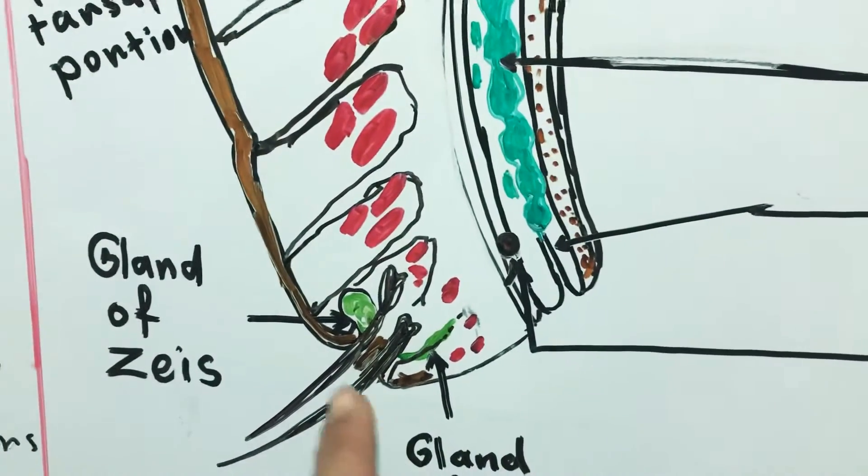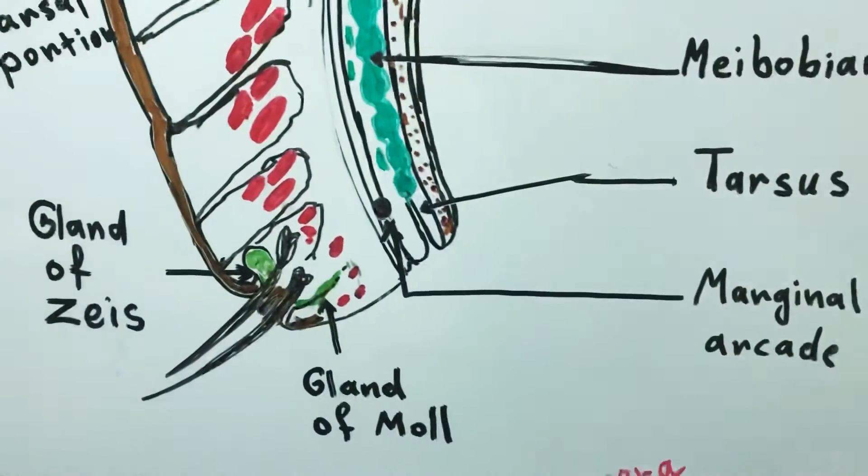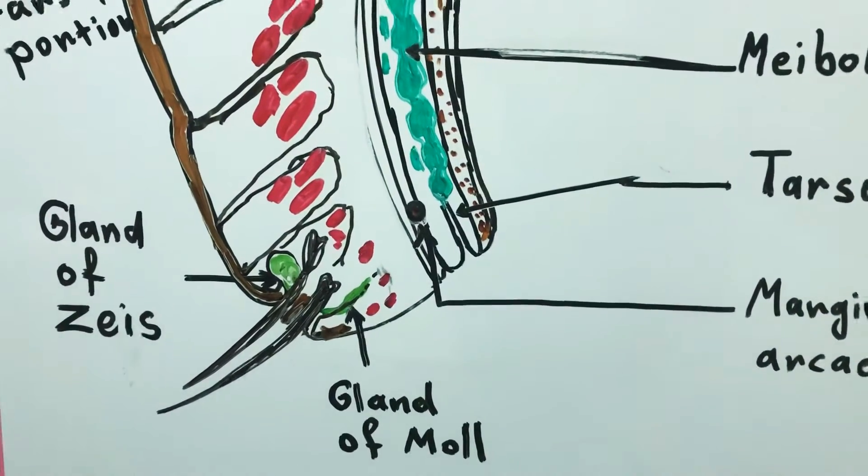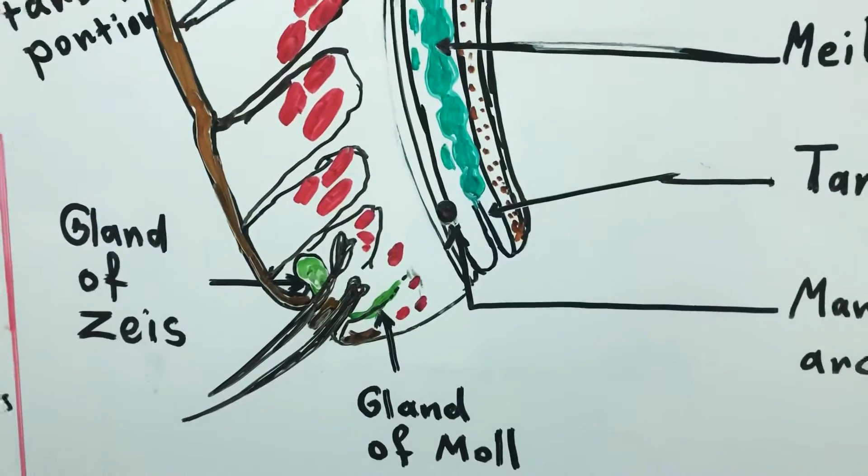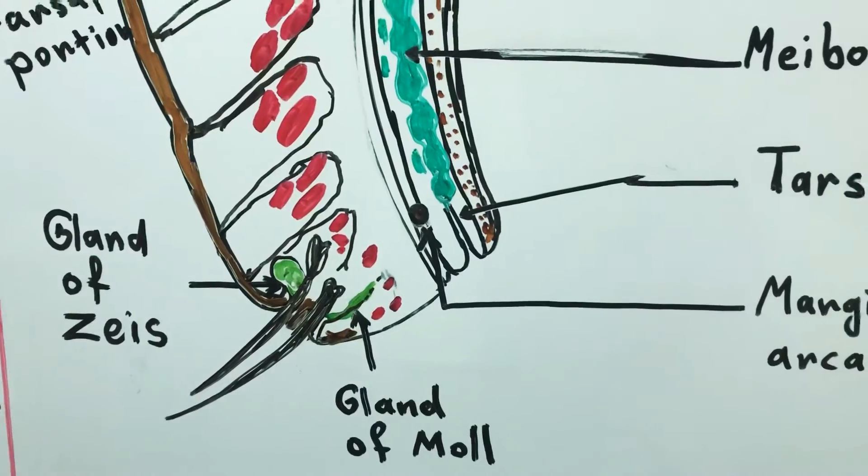Sometimes, the color of the eyelashes are different from the color of the hair. If the eyelashes are pulled out, they usually need seven to eight weeks to grow back.